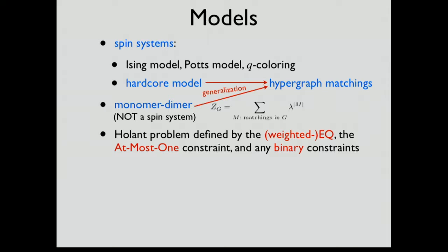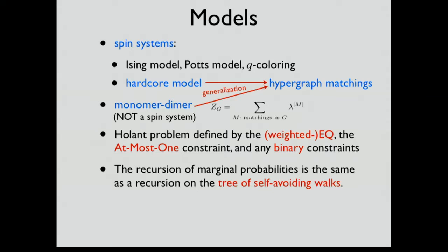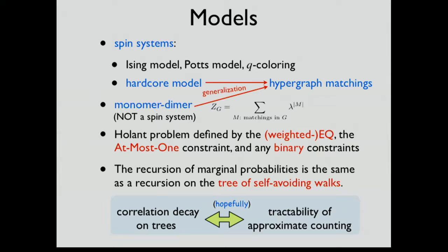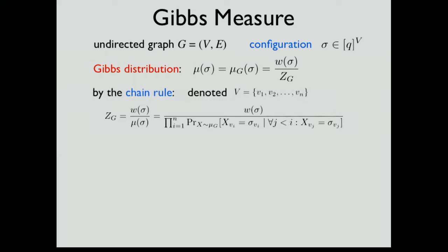For these models, the marginal probabilities in any graph instance are actually marginal probabilities in a tree of self-avoiding walks. This gives us hope that correlation decay on trees might capture the tractability of approximate counting. You might have doubts about this, because for the ferromagnetic Ising model, the model is approximable despite there being no decay of correlation — I will explain this later.